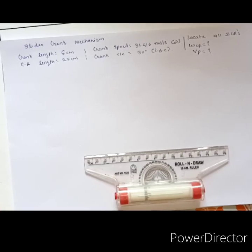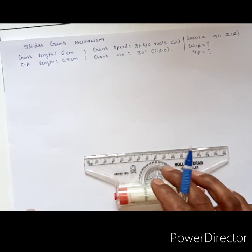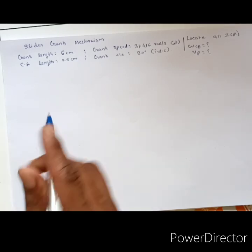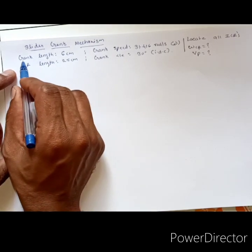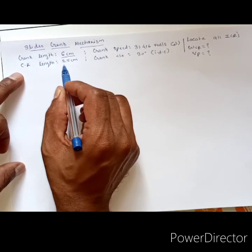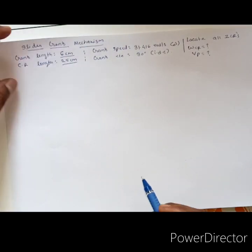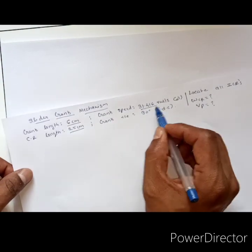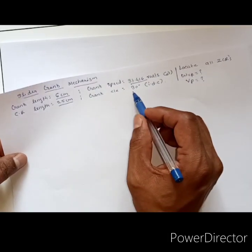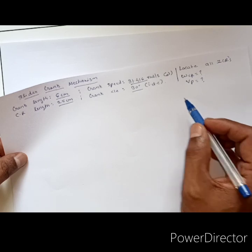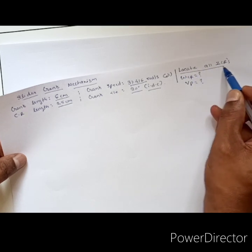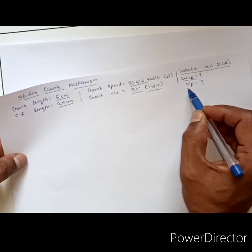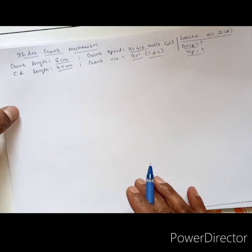Hello everyone, today we will solve one problem on instantaneous center of rotation. The problem is on a slider-crank mechanism. Crank length is 6 cm, connecting rod length is 25 cm, crank speed is 31 radian per second clockwise, and crank angle is 30 degrees from IDC. We have to locate all the ICRs and find the angular velocity of the connecting rod and linear velocity of the piston.